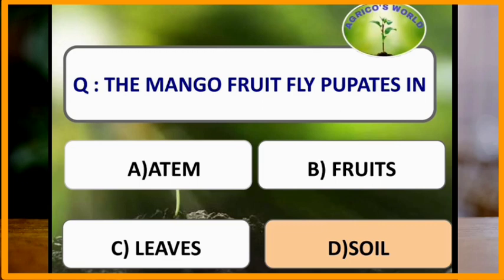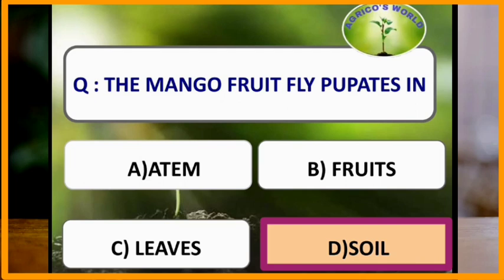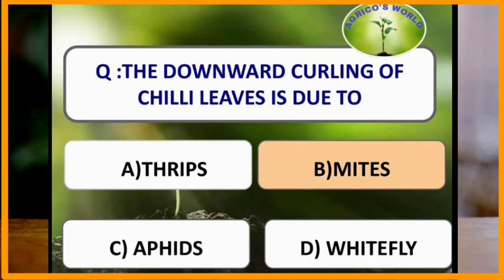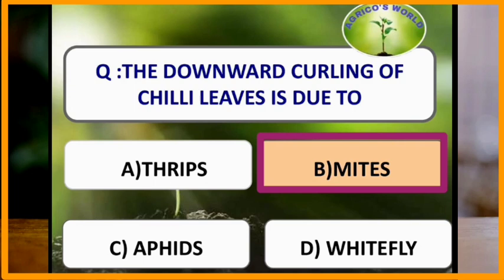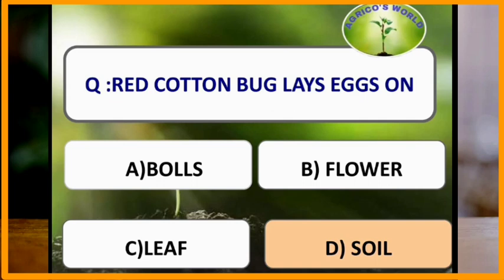The mango fruit fly pupates in soil — the pupation site of mango fruit fly is soil. The downward curling of chili leaves is due to the attack of mites. Red cotton bug lays its eggs on the soil.